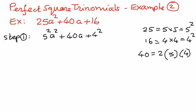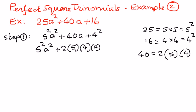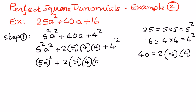So let me write that here. We have 5 to the power of 2, a to the power of 2, plus 2 times 5 times 4, times a, plus 4 to the power of 2.